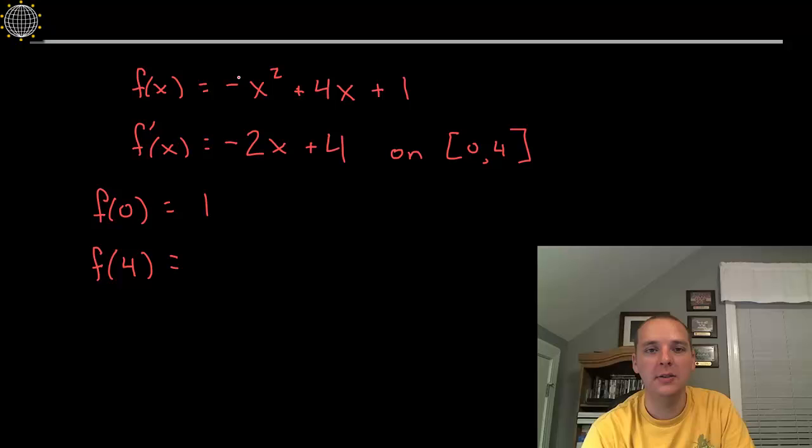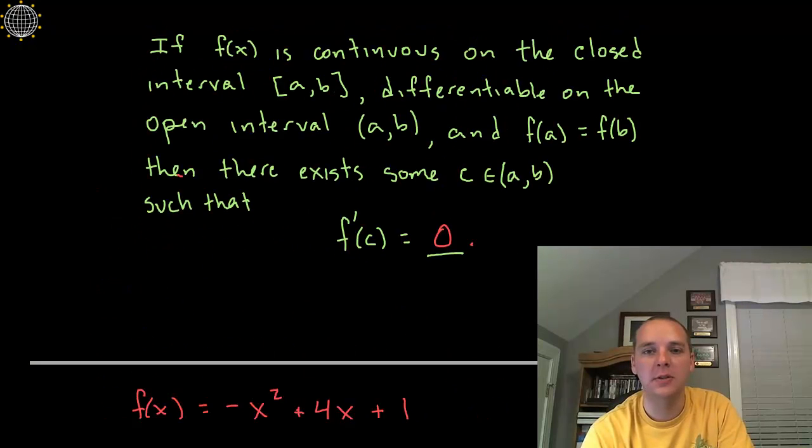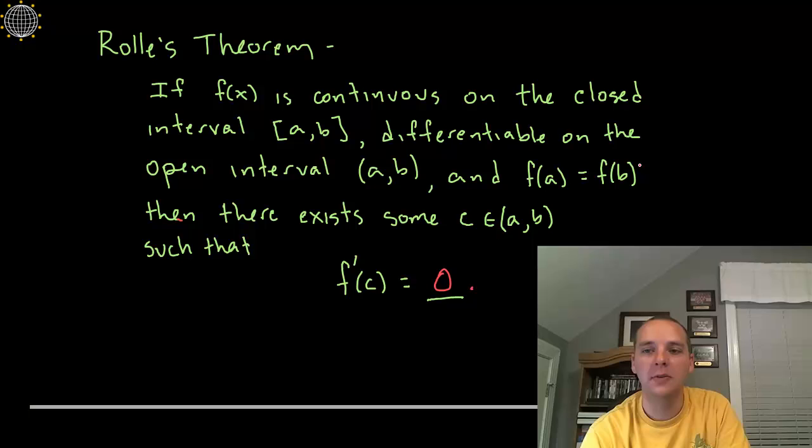And 4 squared is 16, so negative 16 plus 4 times 4 is 16, so negative 16 plus 16 is 0, 0 and 1 make 1. So here we see f of a equals f of b. Let's just check these off, f of a equals f of b, yes it does.